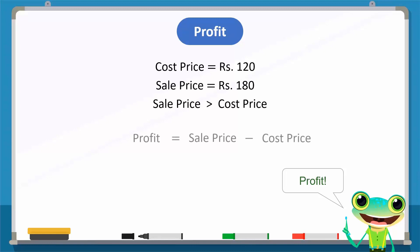Profit is equal to sale price minus cost price, which is 180 minus 120, giving us 60. His profit is therefore 60 rupees.